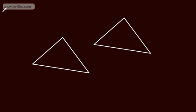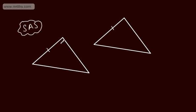The next one is Side-Angle-Side (SAS), and we're talking here about the enclosed angle. So we've got one side, then the enclosed angle which is going to be equal, and then the other side. So this is said to be Side-Angle-Side.